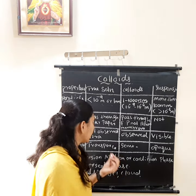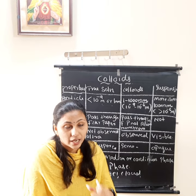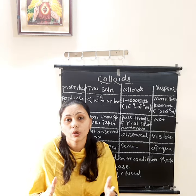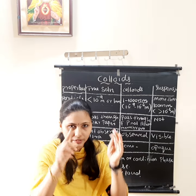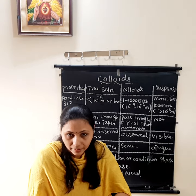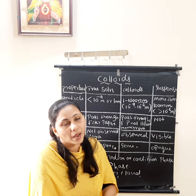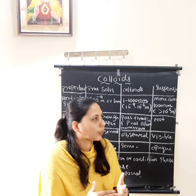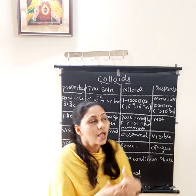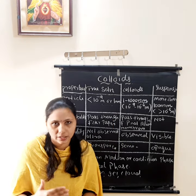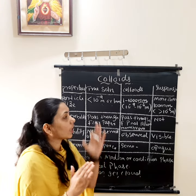The next property is appearance — whether the solution is transparent or opaque. In true solution, the particle size is very small, so it is transparent; you can see through it. Colloids are semi-transparent — not as clear as true solution but semi-transparent. Suspensions have larger particle size, so they are opaque, meaning not transparent. Those are the general properties of true solutions, colloids, and suspensions.